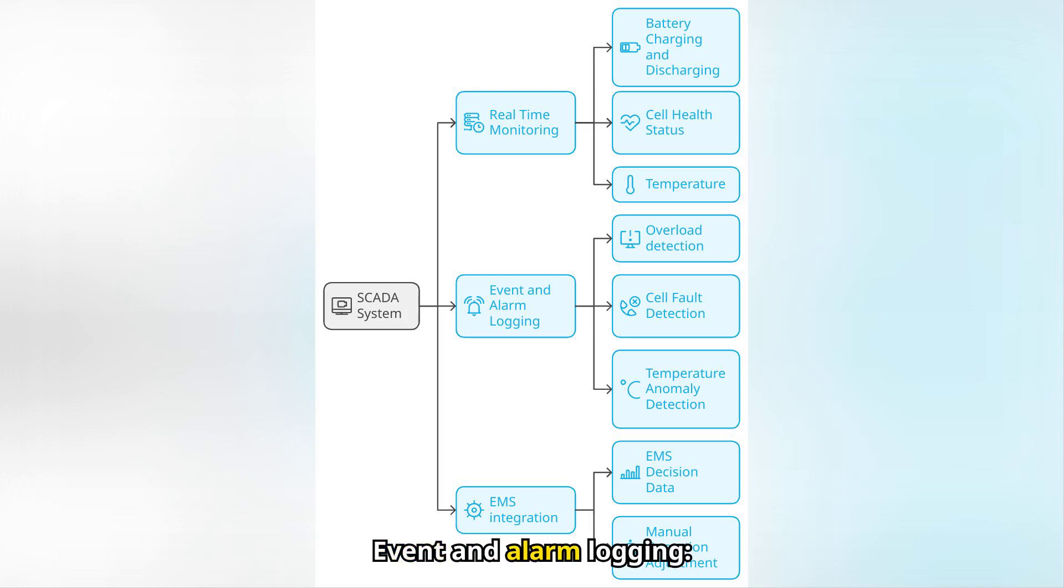Event and Alarm Logging. The system automatically records any anomalies, such as overloads or unexpected variations, generating immediate alerts. This facilitates the implementation of preventive maintenance actions, reducing the risk of serious failures and extending the useful life of the equipment.